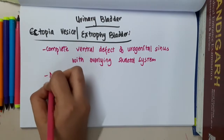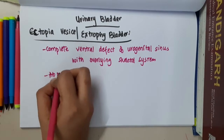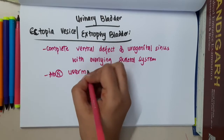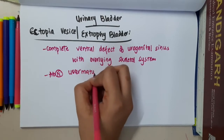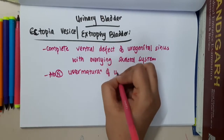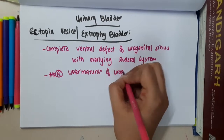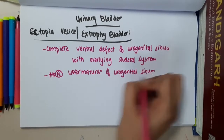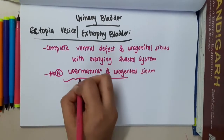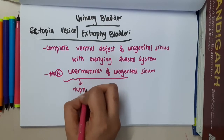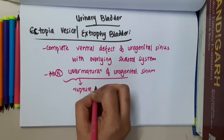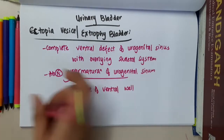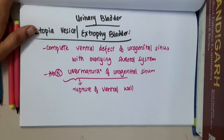This occurs because of abnormal over maturation of the urogenital sinus. Because of increased maturation of the urogenital sinus, this results in rupture of the ventral wall, and thus the posterior wall of the bladder can be visualized through this.